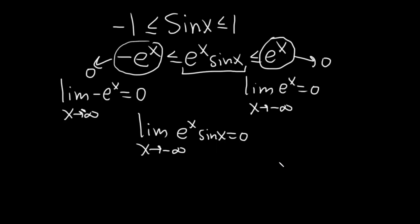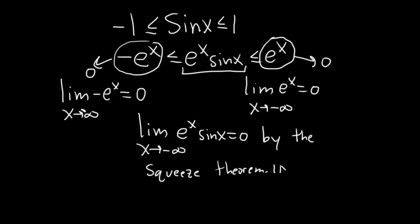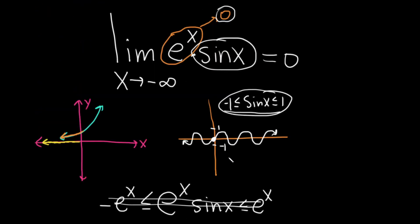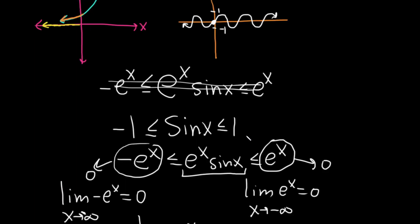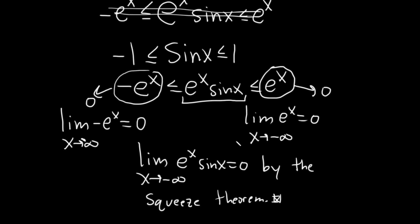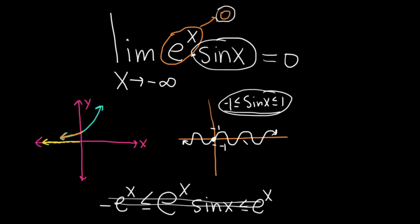This is by the squeeze theorem — we squeezed our function between two other functions that both approach the same limit, in this case zero. So the limit is zero by the squeeze theorem. It's a nice problem because it forces you to think about the graphs of e to the x and sine x, which are very common in mathematics. If you know what the graphs look like, you get intuition as to what the answer should be, and then you can apply the squeeze theorem to confirm it. I hope this video has been helpful. Good luck.